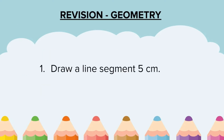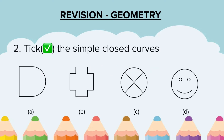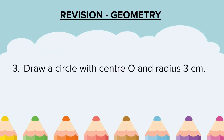Question 1: Draw a line segment of 5 cm. Question 2: Tick the simple closed curves. There could be more than one, so look at all the options, students. Question 3: Draw a circle with center O and radius 3 cm.